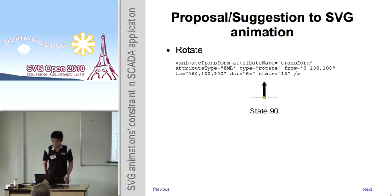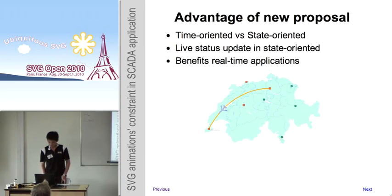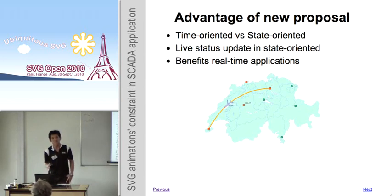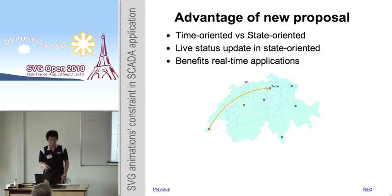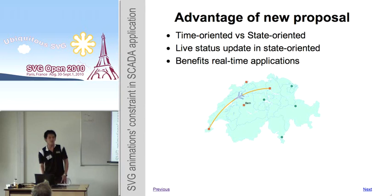For rotate animation, the state attribute is a degree representing the position or direction of the object. Time-oriented animations are not suited to indicate the live status of an object — for example, an aircraft flying in a loop gives only a general idea of a situation. State-oriented animation gives a more specific location of the aircraft, which will definitely benefit all real-time applications.